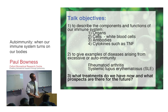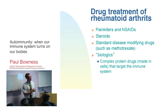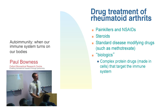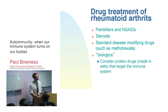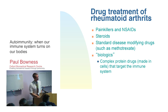For the final part of my talk I want to talk about the treatments of rheumatoid arthritis at the moment and the research and where we're going in the future. The mainstay of drug treatment has been painkillers, non-steroidal anti-inflammatory drugs, steroids - which are a very blunderbuss way of dampening down our immune system - disease-modifying drugs such as methotrexate, which seem to dampen down our T cells, and then what we call biologics, which are complex protein drugs that require to be made in cells and are all targeting our immune systems.